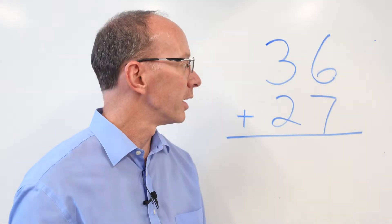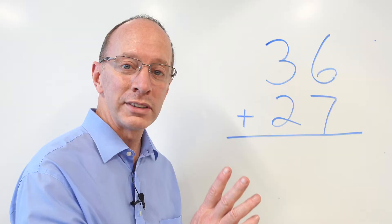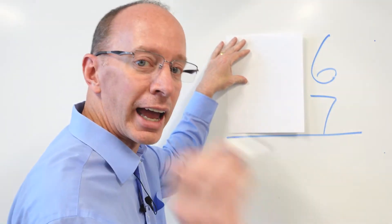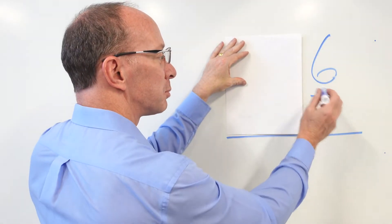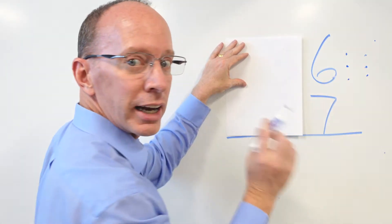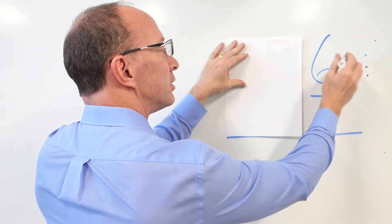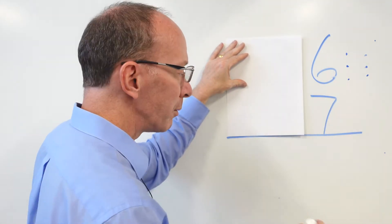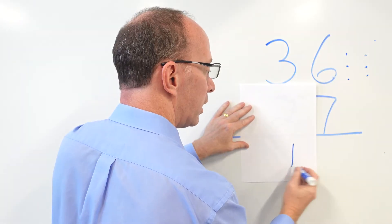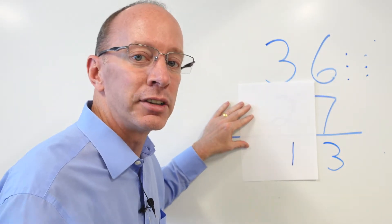Okay, we got our next problem right now. It is 36 plus 27. So once again, if this gets a little confusing, you can cover this up. Our first rule, add the ones. Six plus seven. If you want to, you can put little dots right here. Try to add the biggest number first. So seven, eight, nine, ten, eleven, twelve, thirteen. Now, what I'm going to do is I'm going to write the thirteen like this. One, three.